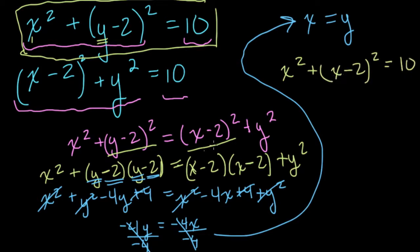Now we just expanded (x-2) squared over here, so we know that equals x squared plus x squared minus 4x plus 4 equals 10. That's what we just expanded before.